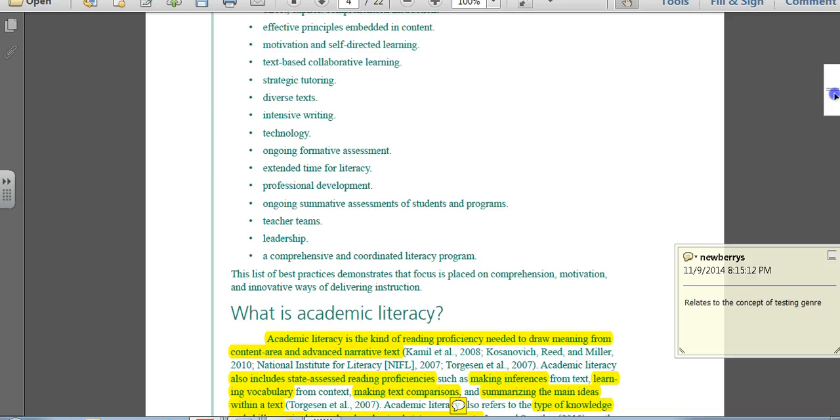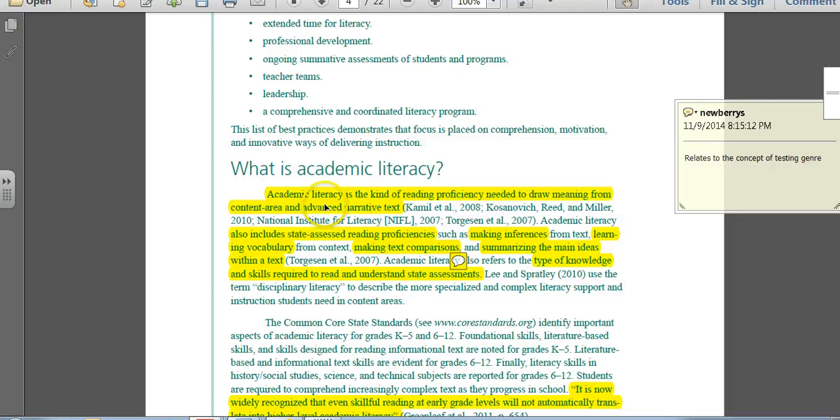As we come down, we're going to look at the next part, which says academic literacy. Academic literacy is the kind of reading proficiency needed to draw meaning from content area and advanced narrative text. As we are looking at academic literacy, we also want to talk about the state-assessed reading proficiencies, such as making inferences, learning vocabulary, making text comparison, summarizing main ideas within text, and also the type of literacy that you would need to be able to read and understand state assessments.